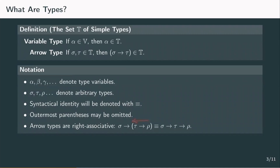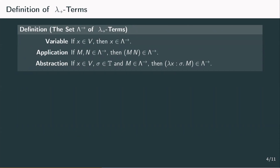With these types at hand, we can now define the set of simply typed lambda terms. The definition should look quite familiar as it only really differs in one detail from the definition of untyped lambda terms. Whenever we construct an abstraction, we need not only the variable which we want to abstract, but also a type for this variable. An abstraction now has the form lambda x of type sigma dot m.